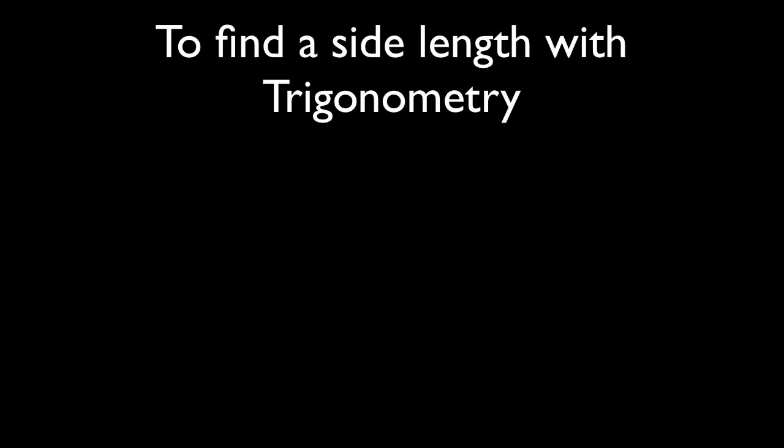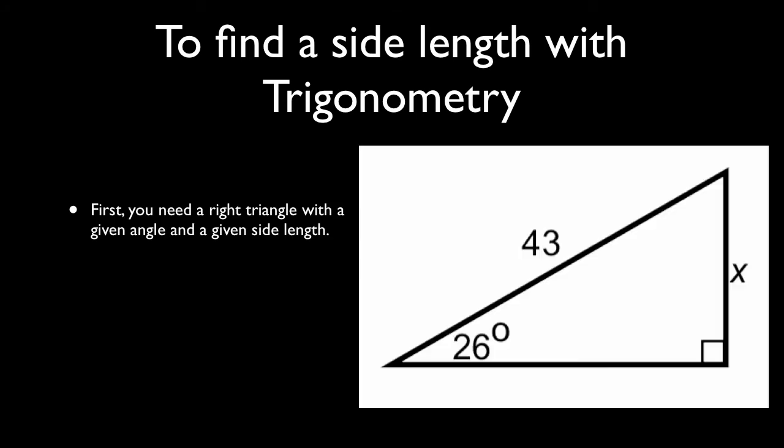So, to find a missing side length with trigonometry, first you need a right triangle with a given angle and a given side length. Next, you set up a trig ratio equation. In this case, we would use the sine function. And then solve for the unknown x. I'll walk you through an example.